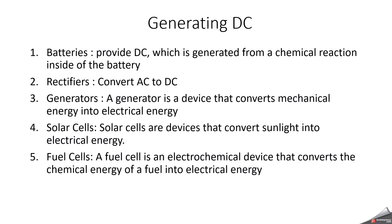Solar panels generate DC current when exposed to sunlight. The DC current is then converted to AC using an inverter for use in homes and businesses. And generator — a generator is a device that converts mechanical energy into electrical energy. Then, thermometric generator — thermometric generators convert heat energy into electrical energy. They generate a DC current by exploiting the Seebeck effect, which produces a voltage difference between two dissimilar conductors. And we have fuel cell — a fuel cell is an electrochemical device that converts the chemical energy of a fuel into electrical energy.